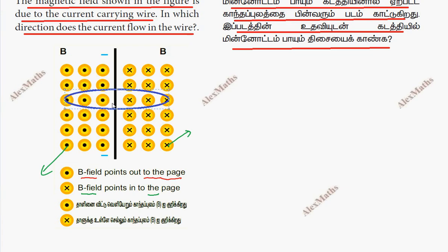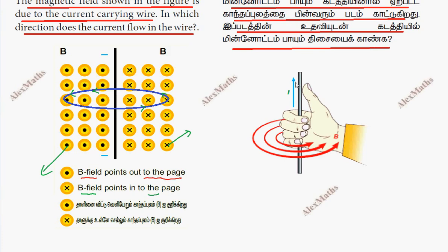For this straight current-carrying conductor, the magnetic field direction points out of the page. To find the current direction, we compare using the right-hand thumb rule. The thumb gives the current direction, and the fingers give the magnetic field direction — fingers pointing upward, magnetic field direction with fingers moving up.